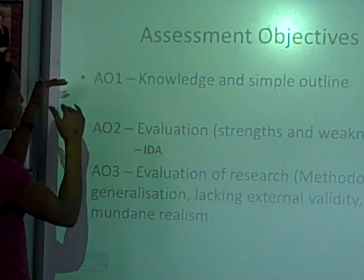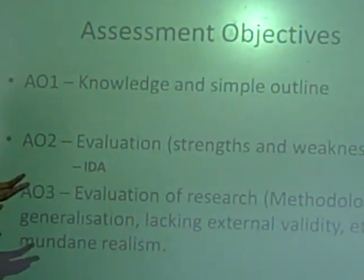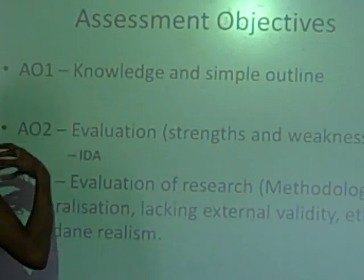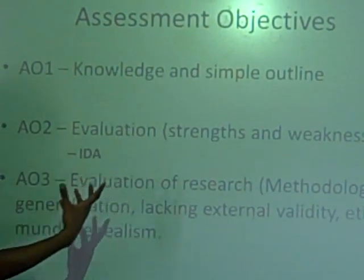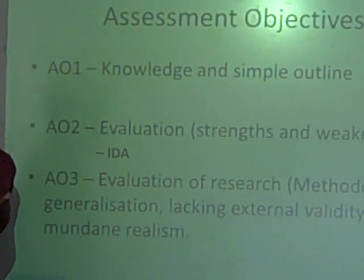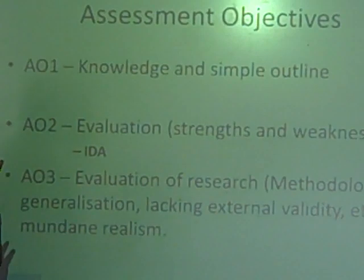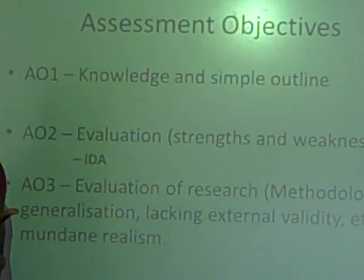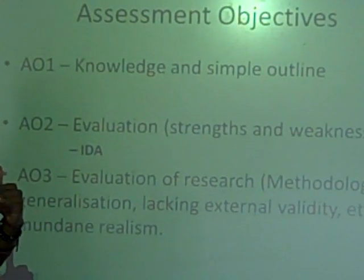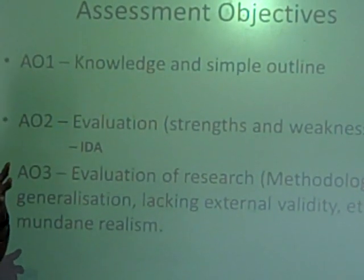Let's go through AO1 first. AO1 is the most simple. What you're doing is just discussing the knowledge — giving a simple outline of whatever it might be. So for example, if it was a theory of Bowlby or a theory of Bandura, you're just giving a very simple outline showing the examiner your knowledge of that theory. And that's AO1.